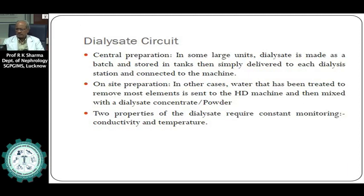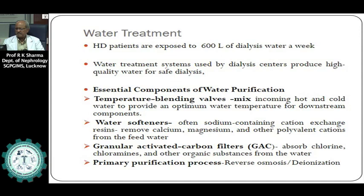The hemodialysis apparatus requires access to the patient's blood, called the dialysis access. From the dialysis access, blood is drawn through a circuit and via a pump goes into the dialyzer, which is essentially a filter with a semi-permeable membrane. From the dialyzer or filter, blood is returned back to the patient in a continuous process.